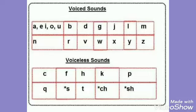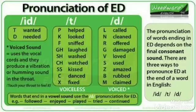So, the sounds in English are divided into voiced — produced with voice, produced with vibration on the vocal cords — and voiceless — produced without voice, produced without vibration on the vocal cords.